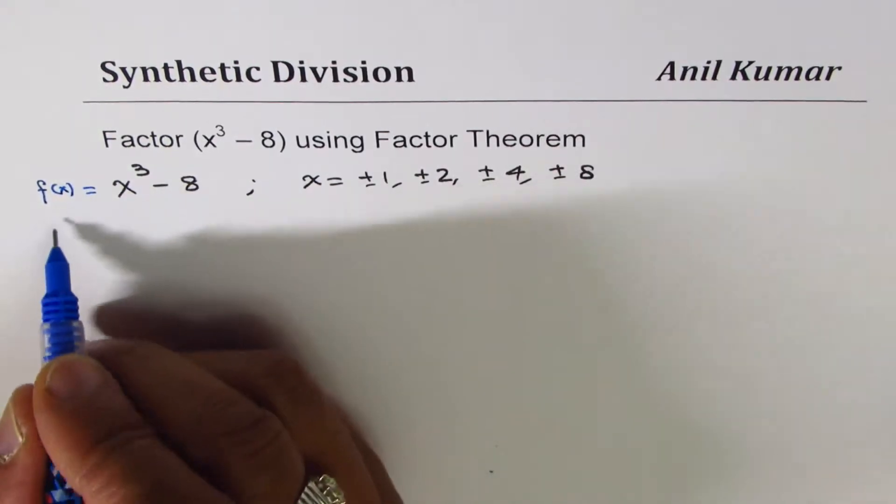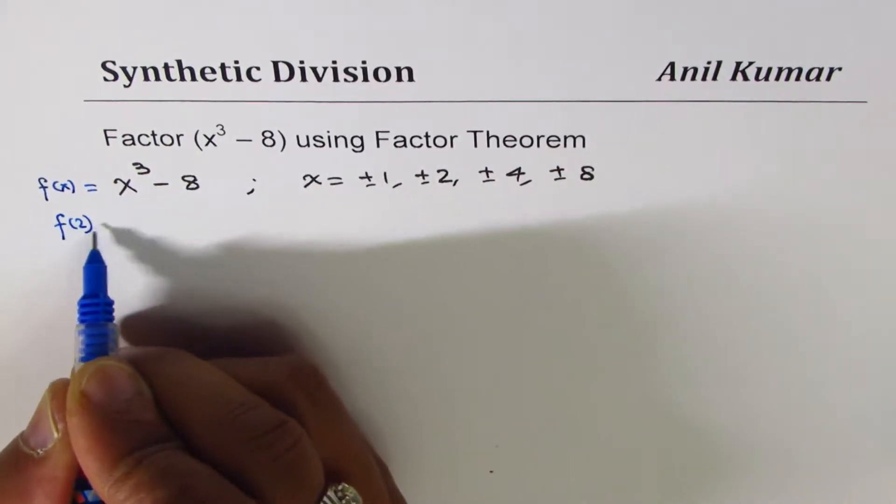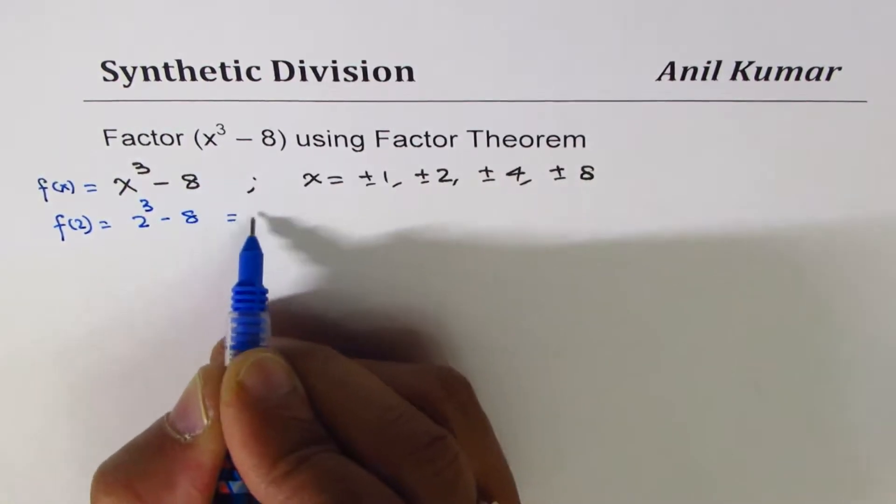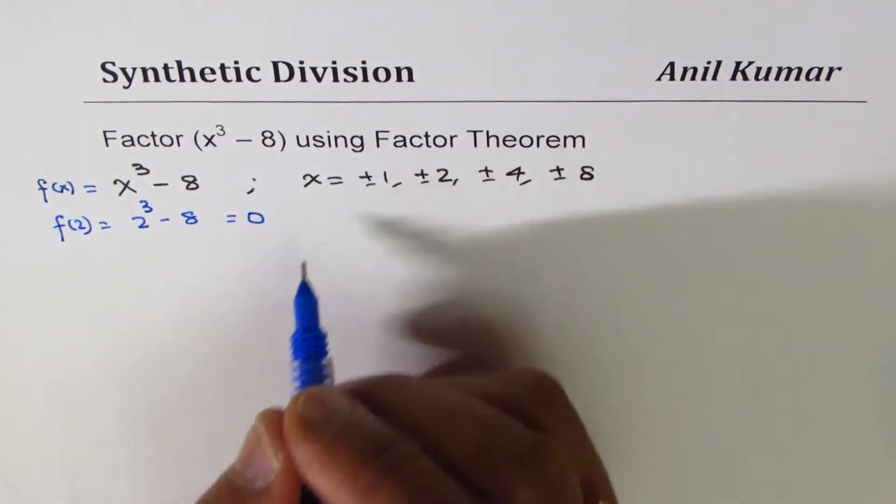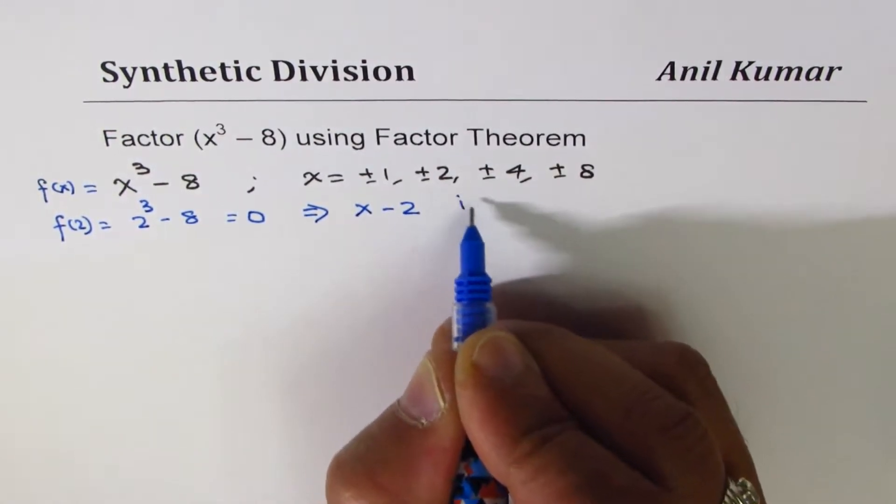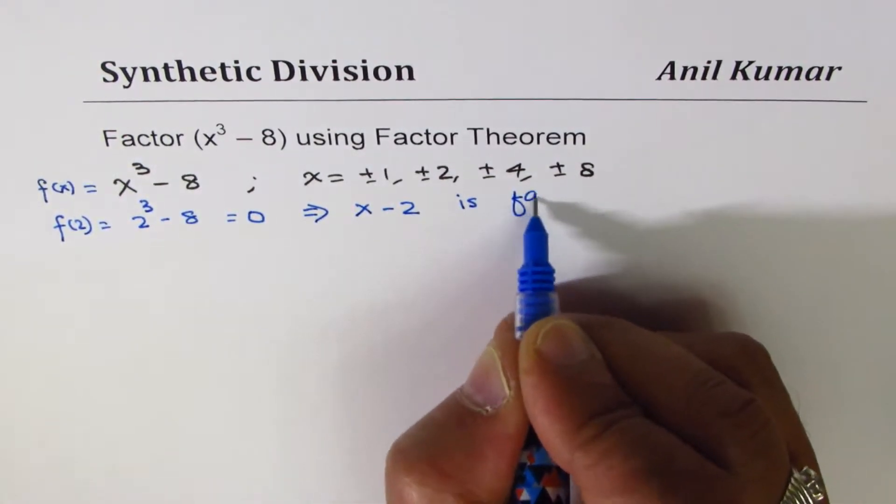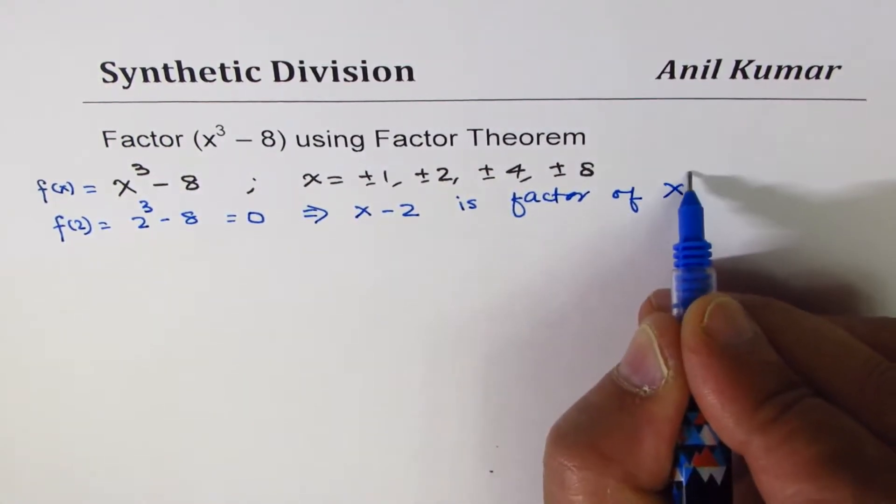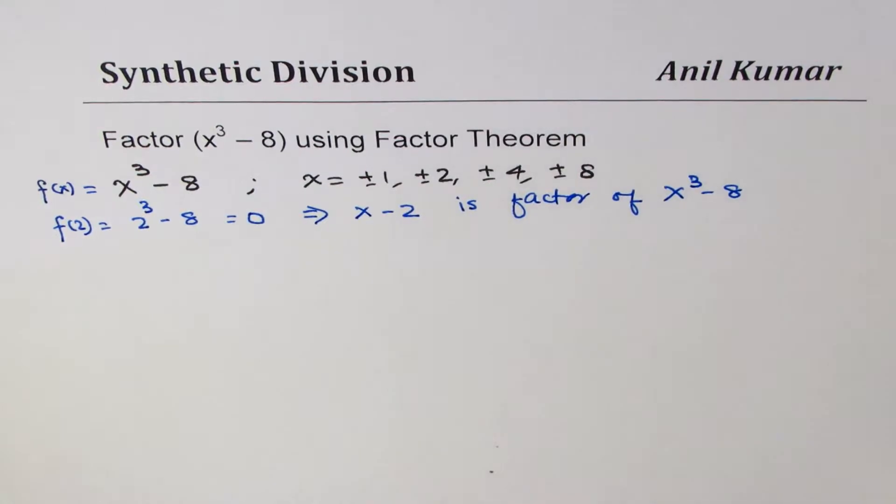Then for 2, it is 0. f of 2 is 2 cube minus 8, which is 0, right? So that means that x minus 2 is factor of x cube minus 8, correct? So that is from the factor theorem.